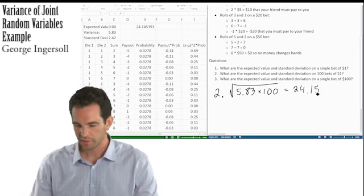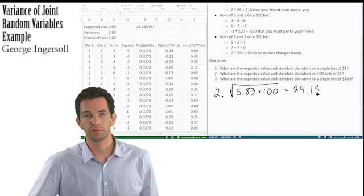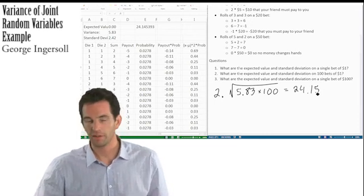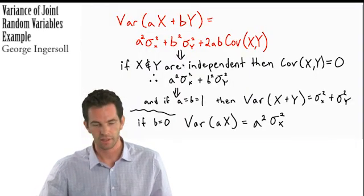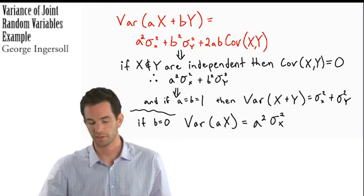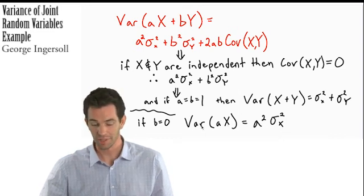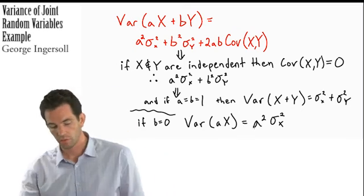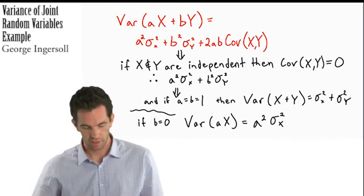What is the expected value and standard deviation on a single bet of $100? That is the variance of 100 times X — a single random variable, single event, times 100. We bet $100 that one time. We can use the equation: a squared times the variance of X, where a is 100.